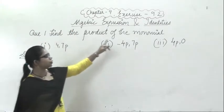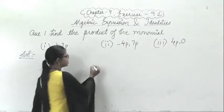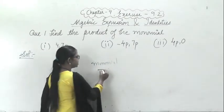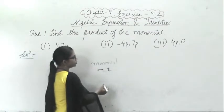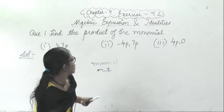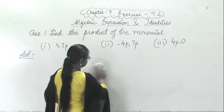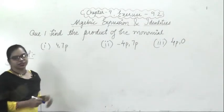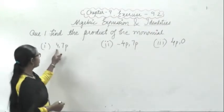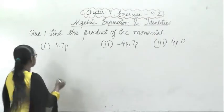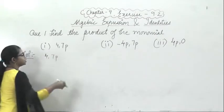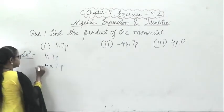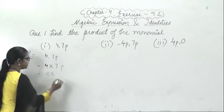In the first question it says: find the product for the monomial. Monomial means one — you get a single term. So you have to multiply the monomial. You can multiply like terms: variable into variable, constant into constant. Here the first question is 4 multiplied by 7p. So this will be 4 into 7p, and 4 sevens are 28, so the answer will be 28p.